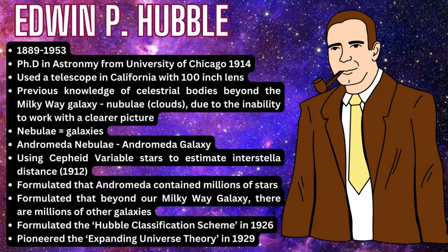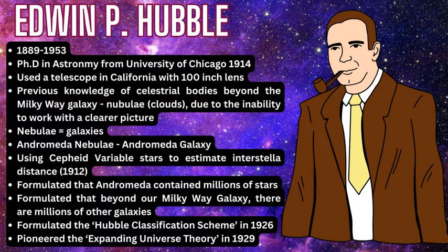Hubble figured out that these nebulae were actually standalone galaxies beyond our own Milky Way, at great distances in space. In particular, he was studying Andromeda, our next local galaxy. A Cepheid variable star in the Andromeda galaxy was used to figure out interstellar distance back in 1912, and he used this to calculate how far Andromeda was from the Milky Way.